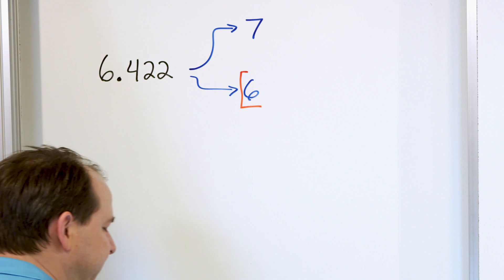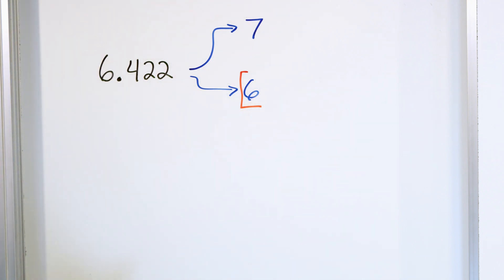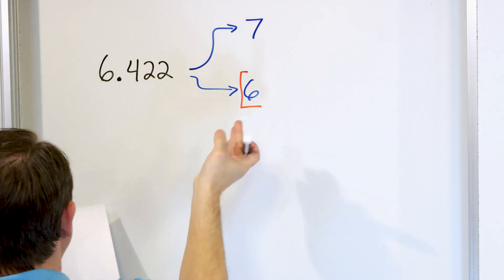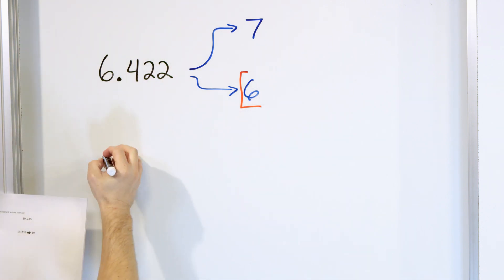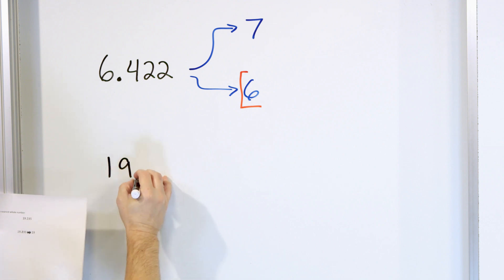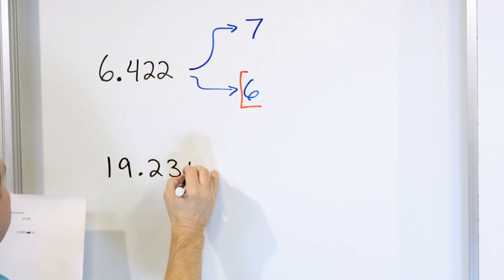All of these problems are going to function the same way — we're rounding all of them to the nearest whole number. To do that, we look next door just beyond the decimal. Let's take a look at the next problem: 19.235.